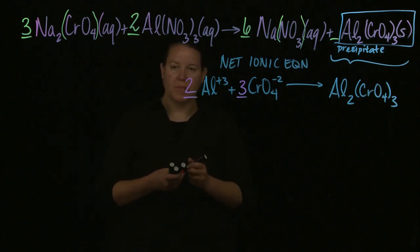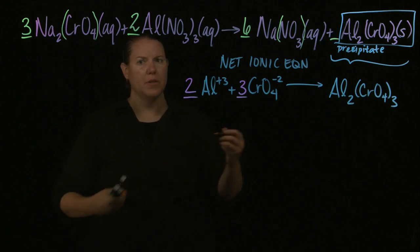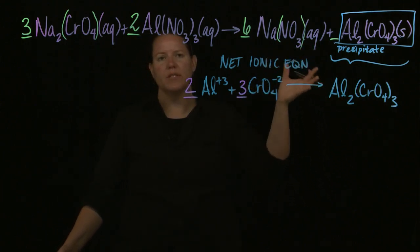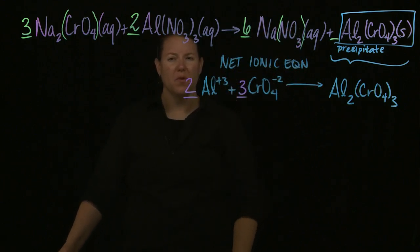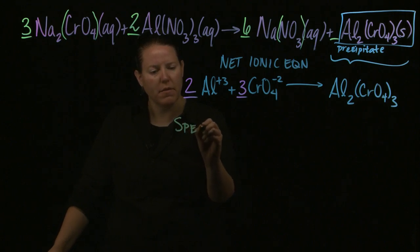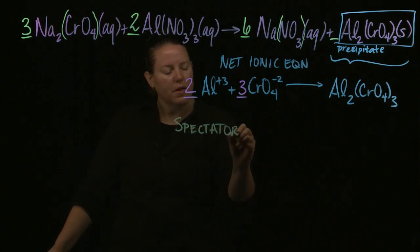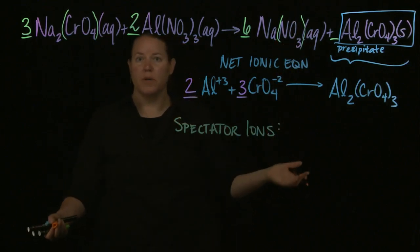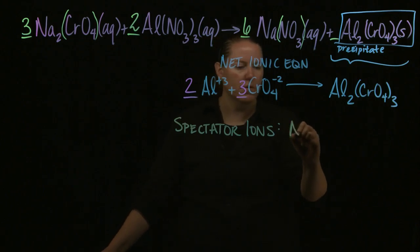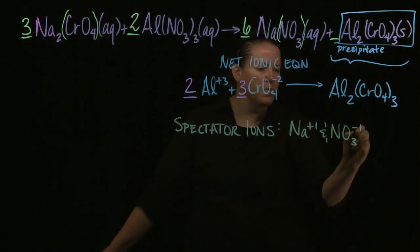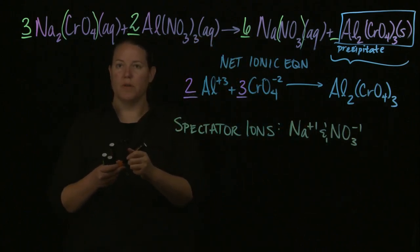If I wanted to figure out what the spectator ions are, I simply look at what's left in the end in solution. And if I'm looking at what's left in the end in solution, I'm looking for a product that has an AQ by it. If I look at the product with an AQ by it, all that I have to do here is I recognize that the product with an AQ by it is sodium nitrate. I tell what two ions made that up, right? So Na plus one, and NO3 minus one are the two ions that made up sodium nitrate, which is my AQ product.